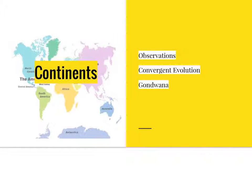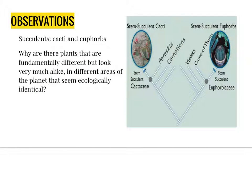Continents: observations, convergent evolution, and Gondwana. Cacti and euphorbs are two different species of desert plants. Cacti are native to North and South America, while euphorbs are desert plants native to Asia, Australia, and Africa. Both species of plants show an adaptive combination of traits like large fleshy stems to store water, spines to protect themselves against predators, and small or non-existing leaves to reduce water loss. Not to mention that both species are capable of living in the habitat of the other.